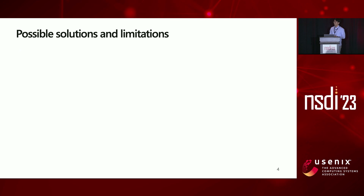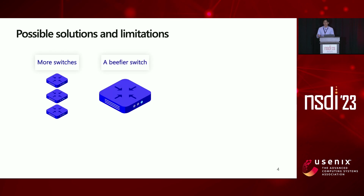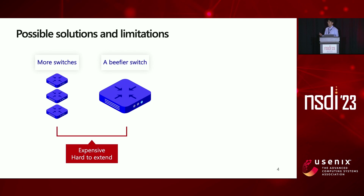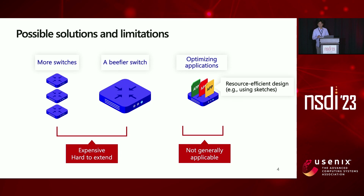There are a few options we can think of to solve this problem. We can have more switches, or we can put more resources on a switch. However, these approaches are very expensive and it's hard to expand as workload changes. There's another option, which is optimizing applications by adopting resource-efficient designs — for example, using sketches or bloom filters instead of a table by trading some accuracy for memory space. This would work for certain types of application, but it's not generally applicable.